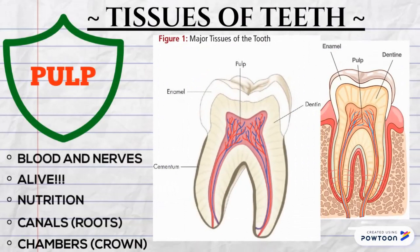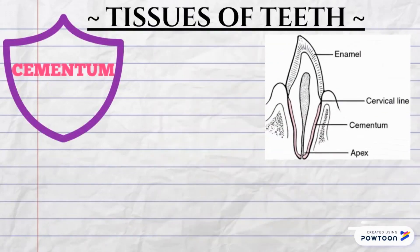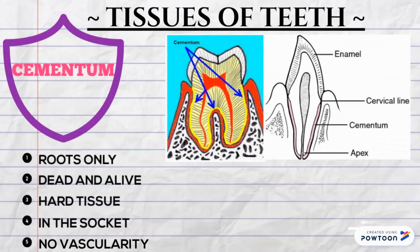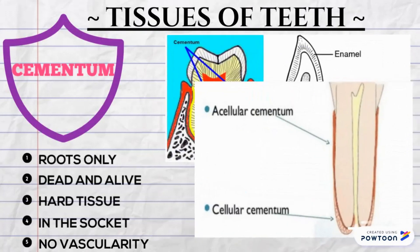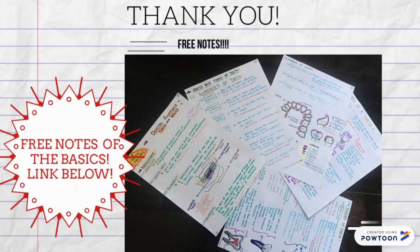Number three: pulp. The pulp is home to the blood vessels and nerves of the tooth. It is a nutrition provider, it is alive, and it exists in canals and chambers. Number four: cementum. Cementum is the enamel of the roots — it covers all dentine and pulp in the root, protects it, keeps the tooth in the socket, and is attached to the socket by the periodontal ligaments. It is both cellular and acellular. Thank you for listening, and there is a link below for you to access the free notes package for today's topic.